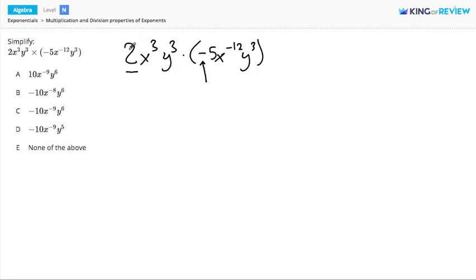For example, 2 and negative 5 go together because they're both coefficients, numbers in front of variables. So we multiply 2 times negative 5 and get negative 10.